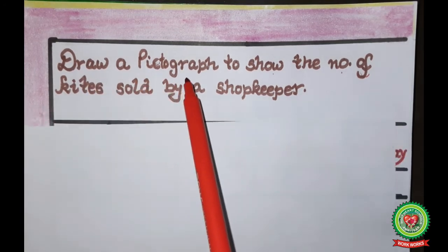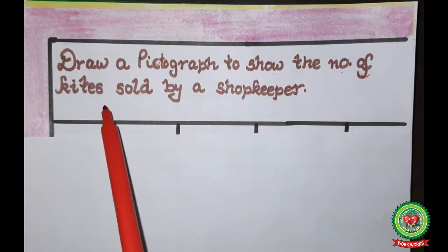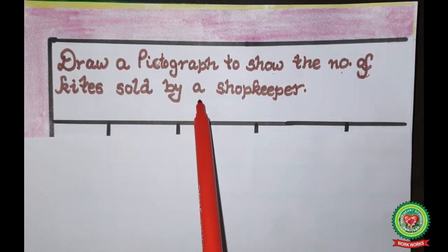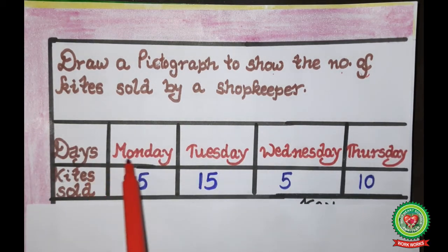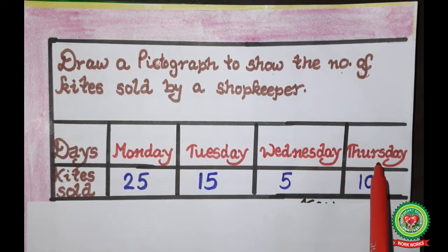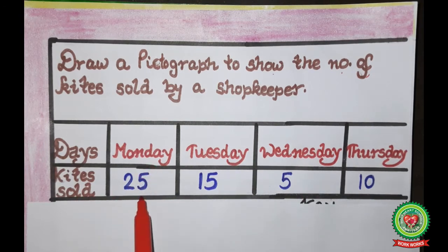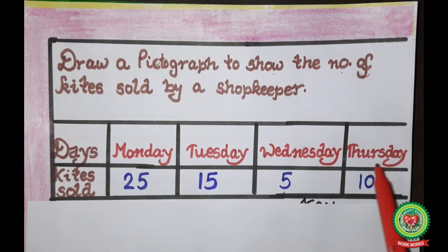Draw a pictograph to show the number of kites sold by a shopkeeper. The days and kites sold are: Monday — 25 kites, Tuesday — 15 kites, Wednesday — 5 kites, and Thursday — 10 kites.